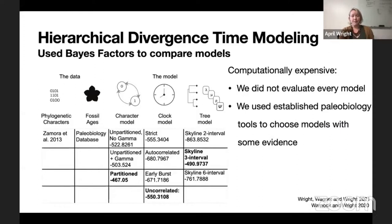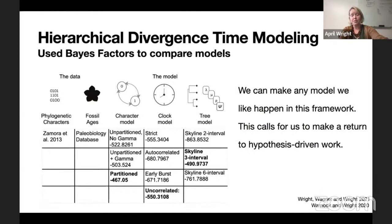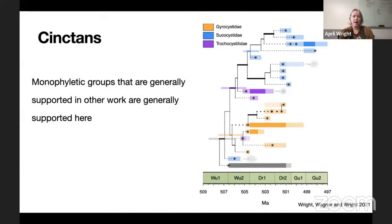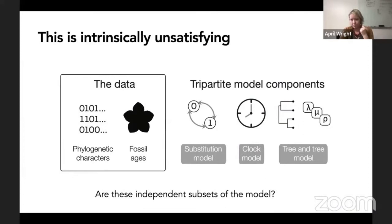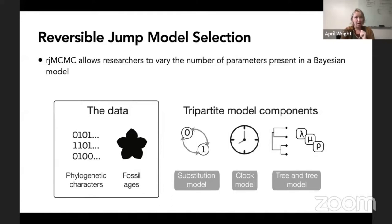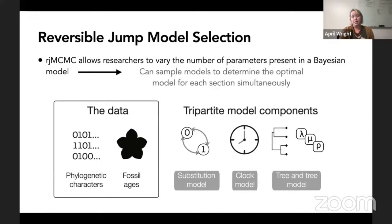The uncorrelated log-normal model was best for the clock, which I was a little bit surprised by. A model in which we have diversification changing per stage was also good. This is computationally expensive, but we were able to get things to work better by not evaluating every single model and instead choosing models that have some prior evidence for them. When you have these types of extremely complex models, it calls for a return to hypothesis-driven work. Why do we think this is the right model? What is our intuition telling us? However, there's something intrinsically unsatisfying: an early burst model can manifest in either the clock or the tree model. What if those interact? Are these subsets independent? My answer is a little bit no. My lab has been piloting what we call reversible jump model selection, which allows us to sample the number of model parameters as part of a Markov chain Monte Carlo analysis, so we can do model fitting for each of our submodels together rather than separately.